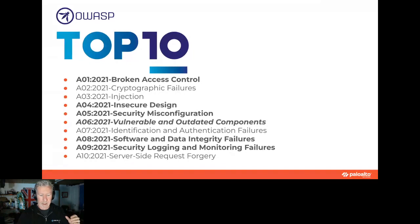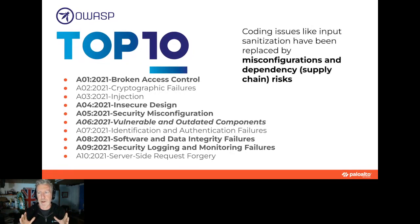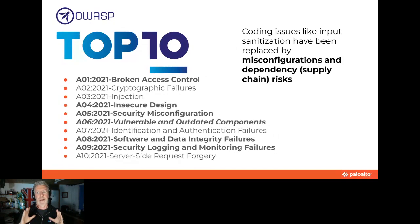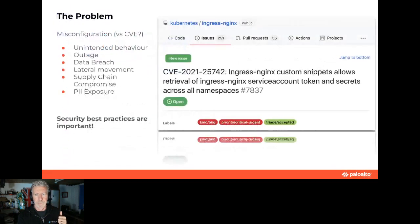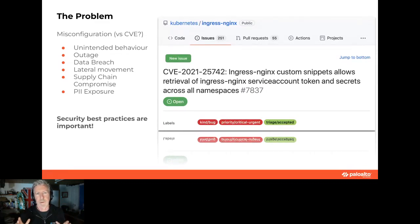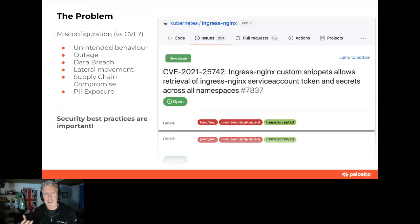InfoSec and AppSec are aligning just like Dev and Ops did long ago. Coding issues like sanitizing inputs to prevent cross-site scripting are being replaced by straight-up misconfigurations or dependency supply chain risks. This is why we're doing talks like this — to raise the profile of these things and discuss how we can have security mitigations in place.